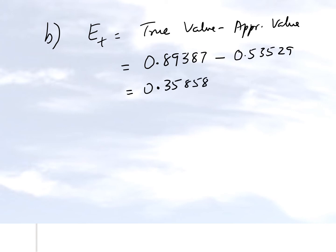If we want to find the absolute relative true error, it will be the true error divided by the true value, absolute value of that. And if we calculate in terms of percentage, we will multiply it by 100.